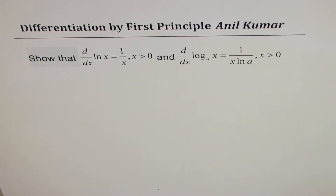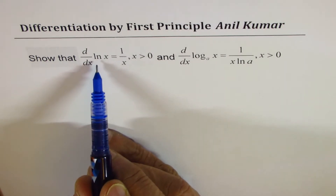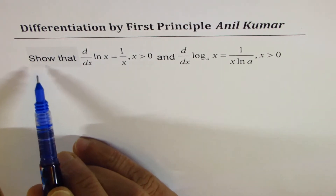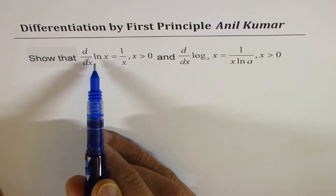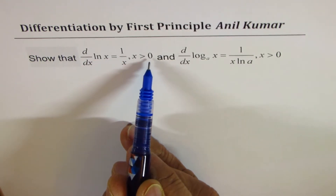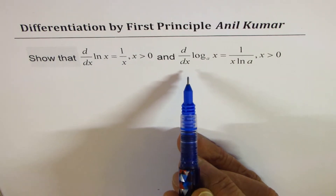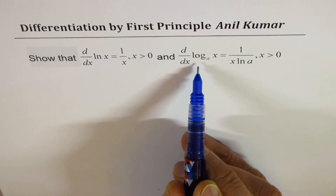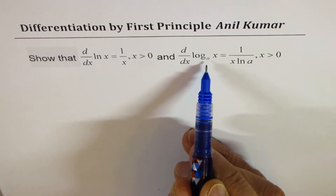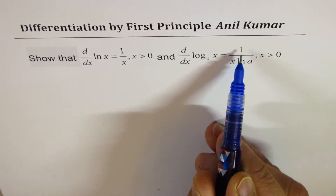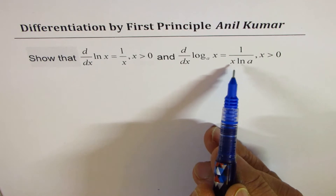I'm Manul Kumar. In this video, we'll discuss how to use first principles to find the derivative of logarithmic functions. I'll begin with the natural log, which is log to the base e, and show that the derivative of ln(x) is 1 over x, where x is greater than 0. In the second part of this video, we'll show how to find the derivative of log to the base a in general, and that will be 1 over x times ln(a).